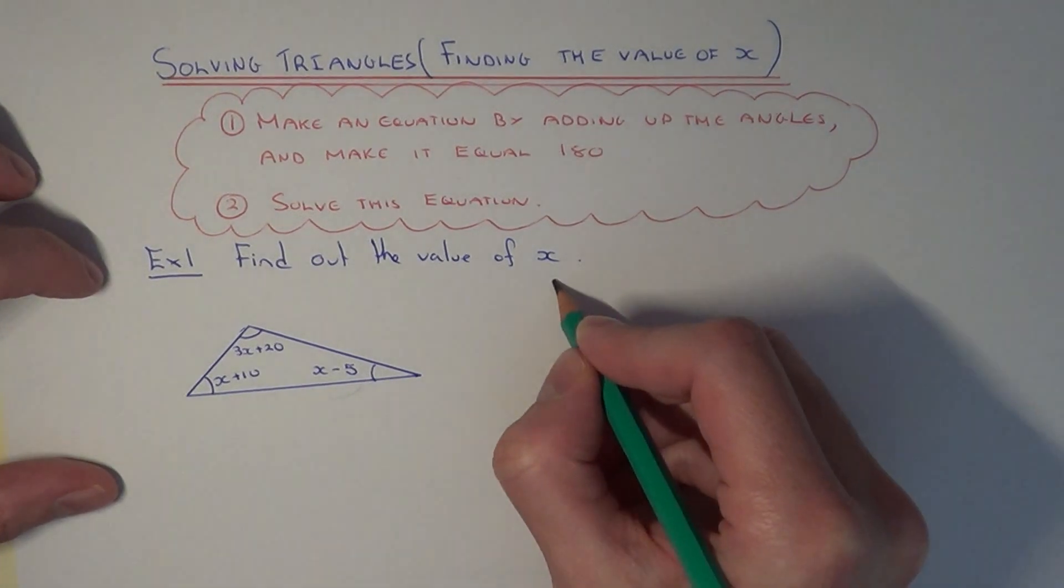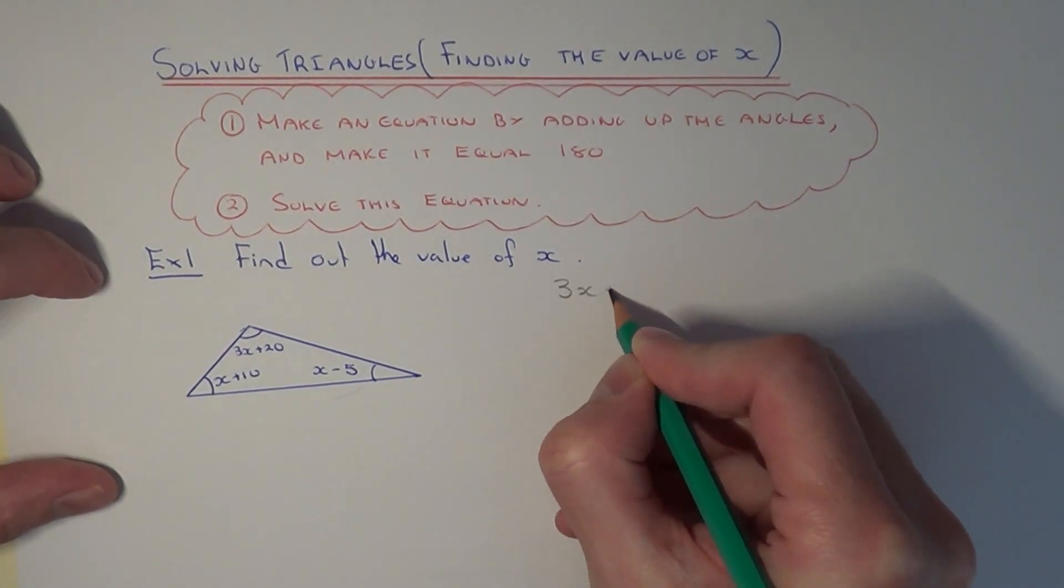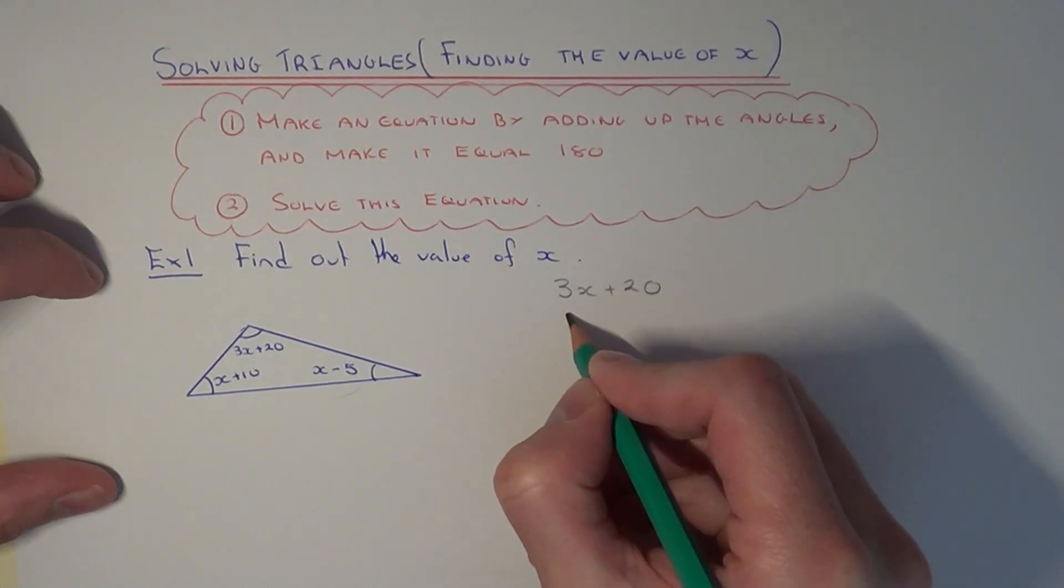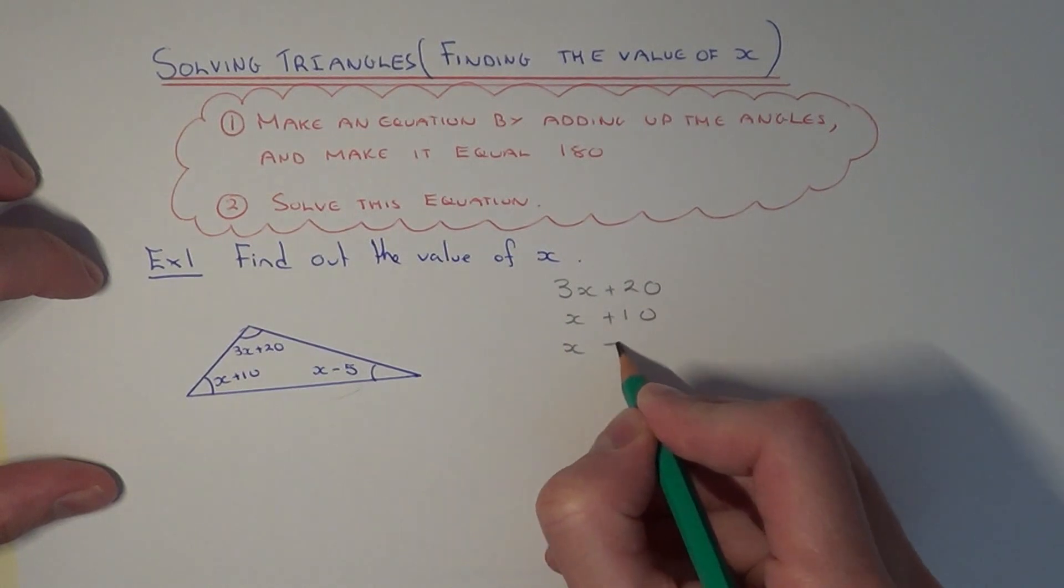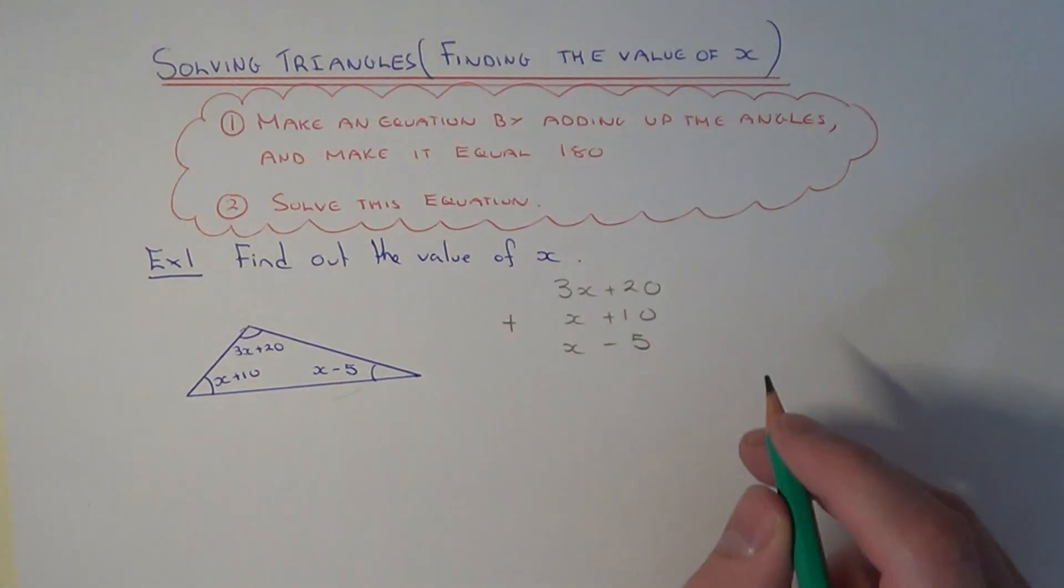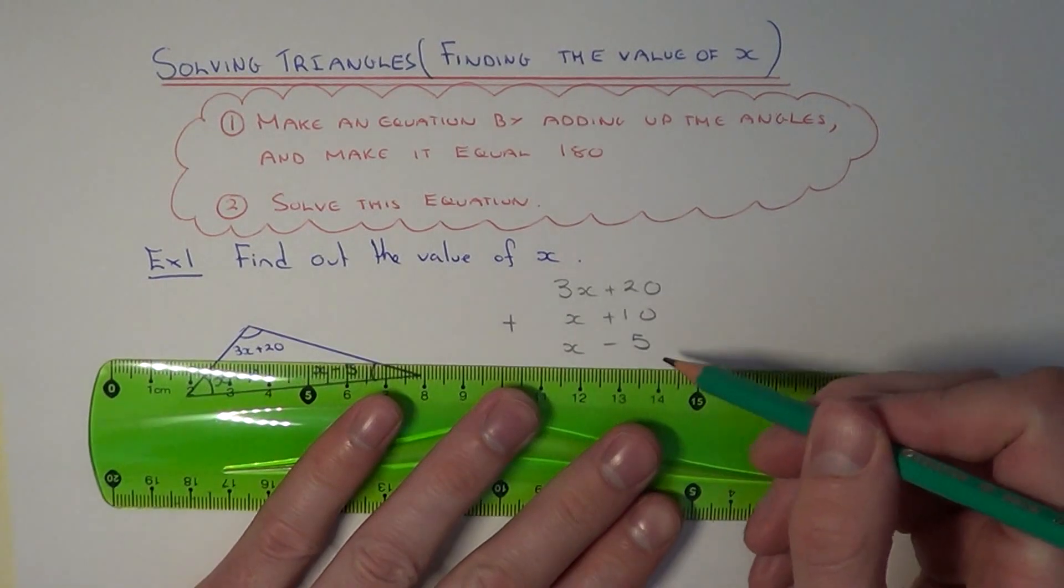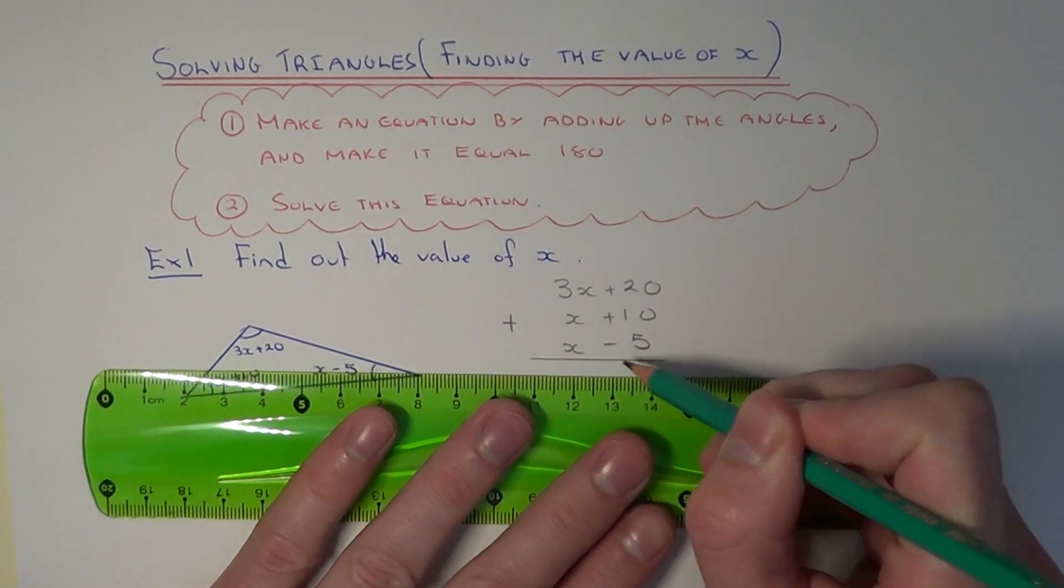To begin with, let's add up the three angles which are given. The easiest way to do this is to write the three angles underneath each other. This makes it easier to add up.